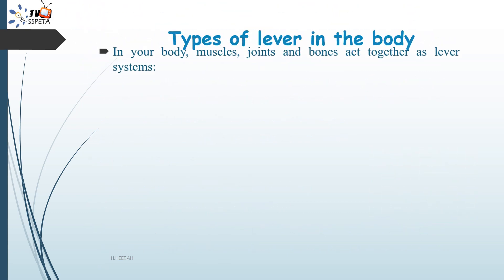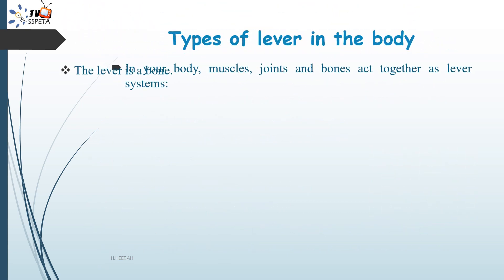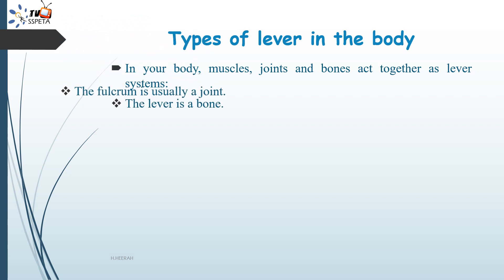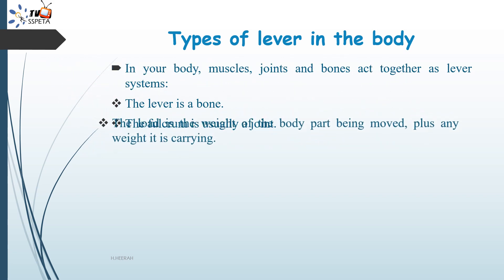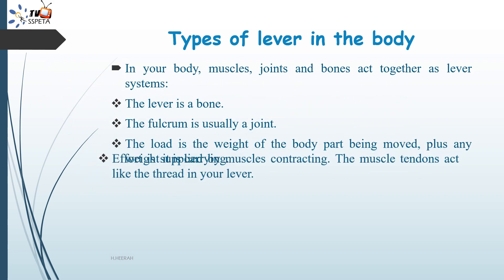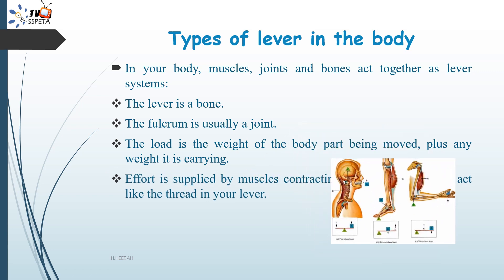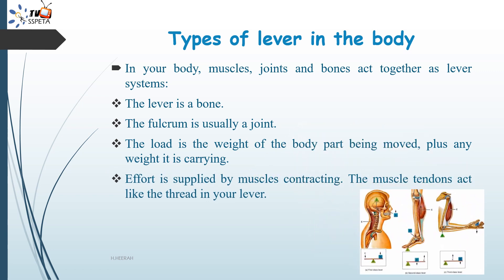In the body, muscles, joints and bones act together as lever systems. The lever is a bone, the fulcrum is usually a joint, and the load is the weight of the body part being moved plus any weight it is carrying. Effort is supplied by muscles contracting, and the muscle tendons act like the thread in a lever.